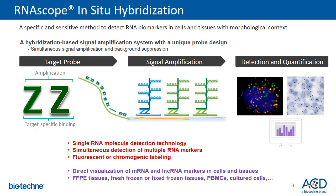RNAscope is a novel in situ hybridization technology with a unique probe design that allows simultaneous signal amplification and background noise suppression to achieve single molecule detection at a single cell level while preserving tissue morphology. RNAscope assay works virtually for any genome, any gene, and in any tissue. The technology consists of three major parts: a unique target probe that ACD designs against your sequence of interest, a signal amplification system that amplifies the signal with a high signal-to-noise ratio, and lastly visualization of single RNA molecules as punctate dots.